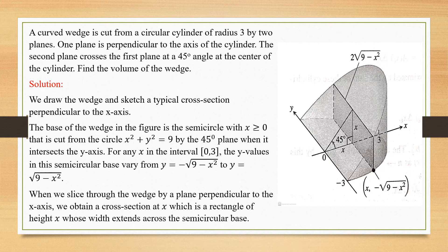For any x in the closed interval 0 to 3 — we consider this closed interval because we include both endpoints 0 and 3, and the radius is 3, so we take it from the middle — the y values in the semicircular base vary from y = −√(9 − x²) to y = √(9 − x²). From the circle equation, y² = 9 − x², so y = ±√(9 − x²).